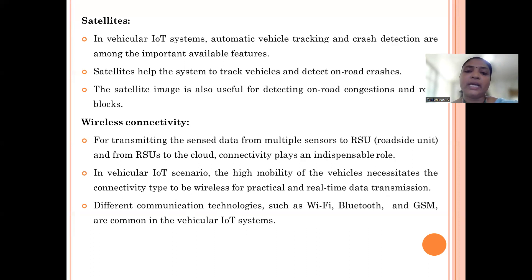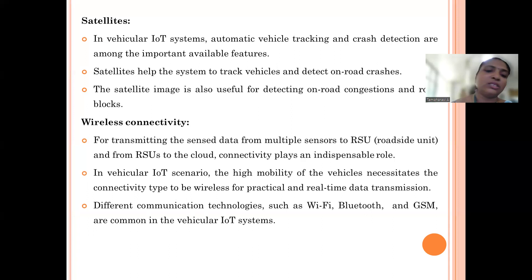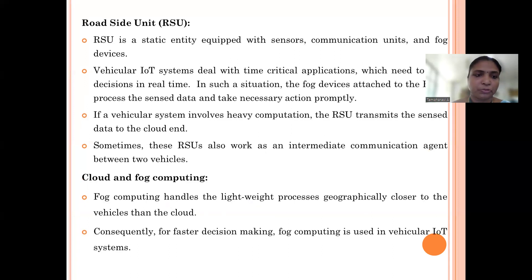Once data has been collected through satellites, cameras, or sensors, it must be transmitted to the roadside unit for further processing. From the roadside unit, data is transferred to the cloud. For this transmission, wireless connectivity such as Wi-Fi or Bluetooth is used for communication.